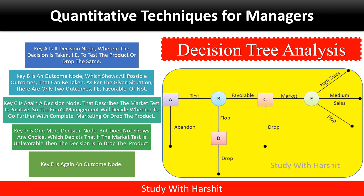Here is the diagram of decision tree analysis. Key: A is a decision node where the decision is taken — to test the product or drop it. B is an outcome node. C is again a decision node. D is one more decision node but does not show any choice. E is again an outcome node.